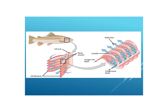A similar process happens in fish gills, because aquatic organisms have to extract oxygen from the water. As fish take in water through their mouth, they push the water back across the gills, which are highly vascularized with lots of tiny capillaries. Carbon dioxide moves from the blood vessels into the water, and on the other end oxygen moves from the water into the blood vessels — similar to what's happening in the alveoli, but in water.